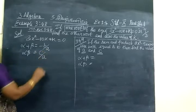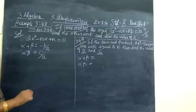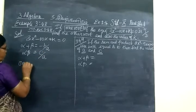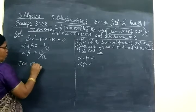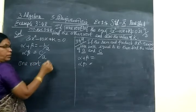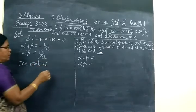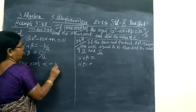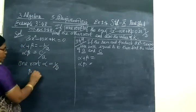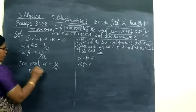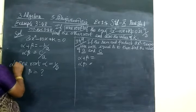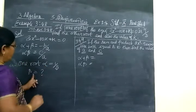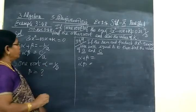Alpha times beta equals c by a, and you are given one root. The value of one root — we consider alpha equal to 1/3. You have to find the value of beta. So alpha equals 1/3 and beta is unknown.